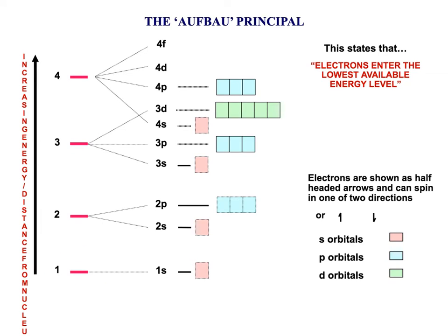The first shell is divided into one subshell — the S subshell. All S subshells can contain 2 electrons because they contain just one orbital, and each orbital can take 2 electrons. The second shell contains 2 subshells: the S subshell which holds 2 electrons, and the P subshell which has 3 orbitals and can contain a total of 6 electrons.